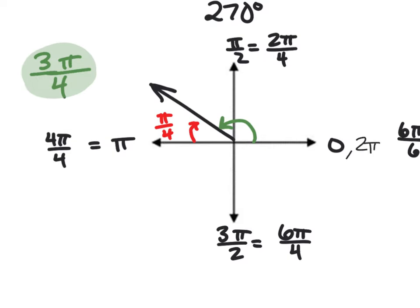For 3π/4, with a denominator of 4, I find it helpful to convert all 90-degree radian measurements to a common denominator. So π/2 becomes 2π/4, π becomes 4π/4, and 3π/2 becomes 6π/4. Now I can see that 3π/4 is between 2π/4 and 4π/4, placing it in quadrant 2 — specifically π/4 less than π, so there's 1π/4 remaining as the reference angle.